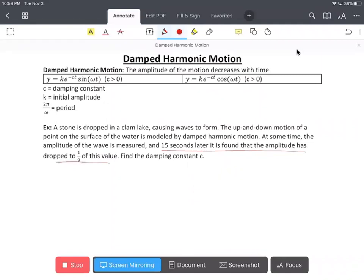So we're going to write ke raised to negative c times, but t was after 15 seconds so we're going to add 15 to our t, equals which has dropped to one-ninth of this value, so one-ninth ke raised to negative ct.